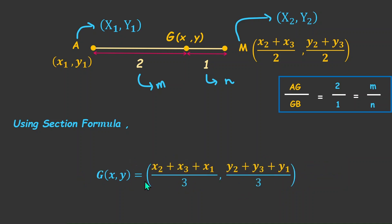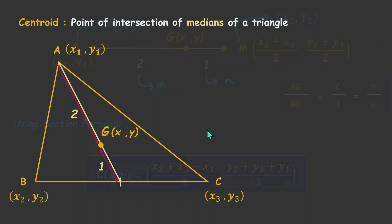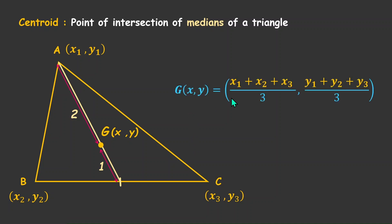So ultimately what we get is this, and that's really it. This is such a convenient formula because it's just the summation: (x1 + x2 + x3) / 3, and the y-coordinate is (y1 + y2 + y3) / 3. Going back to our original question: if this is a triangle and G is the centroid, then the coordinates of the centroid are ((x1 + x2 + x3) / 3, (y1 + y2 + y3) / 3) when the coordinates of A, B, C are known. And that's all there is to it.